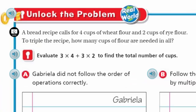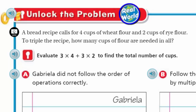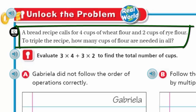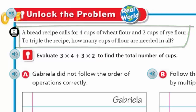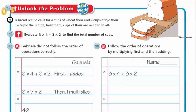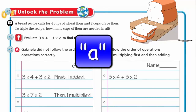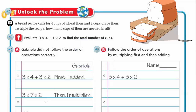Let's go ahead and come down and take a look. We just can't do any of this unless we unlock the problem. It's real world, baby. Real world. Here it says: a bread recipe calls for 4 cups of wheat flour and 2 cups of rye flour. To triple the recipe, how many cups of flour are needed in all? And look at that — there's some bread over on our page, and what's that? A tail? There's something underneath my bread!